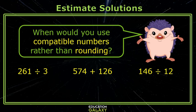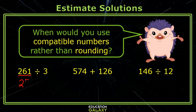For example, 261 would normally round to 260, but I know that 9 times 3 is 27, so if I think of this as 270 divided by 3, I know the answer is approximately 90.